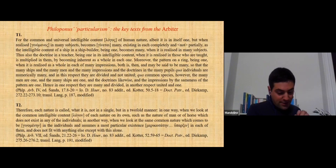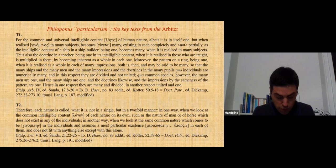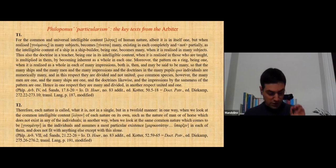Now, please be patient, let me read also text 2, which is shorter. Therefore, each nature is called what it is, not in a single, but in a two-fold manner. In one way, when we look at the common intelligible content, logon, of each nature on its own, such as the nature of man or of horse, which does not exist in any of the individuals. In another way, when we look at the same common nature, which comes to be in individuals and assumes the most particular existence in each of them, and does not fit with anything else except with this alone.